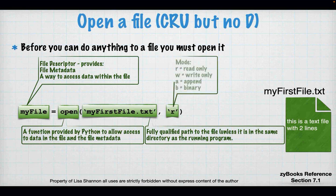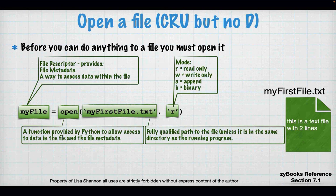The mode tells Python what it's allowed to do with the file. Read means I can only open it and read from it — I can't make a change to it. Write means I'm going to open it and start writing; I don't care if anything was there before because it's going to automatically delete it — that's what the W mode does. Append means right after the last line, just start adding things.